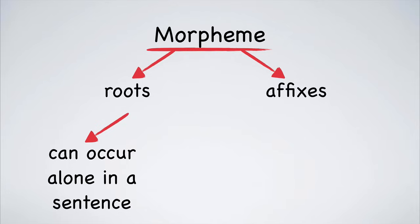There are two types of affixes: prefixes and suffixes. Prefixes are added to the beginning of a root. A suffix is added to the end.